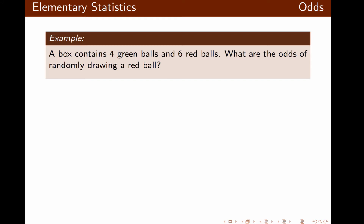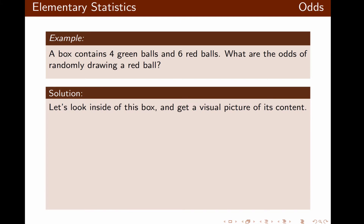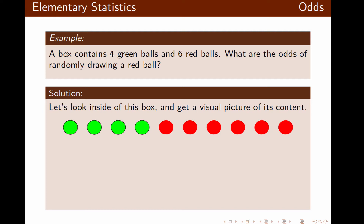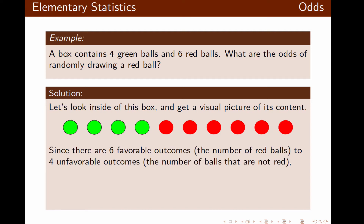Let's look at this example. A box contains four green balls and six red balls, and we want to figure out the odds of randomly drawing a red ball. We have six favorable outcomes, which is the number of red balls, and four unfavorable outcomes, which is the number of balls that are not red. So the odds are 6 to 4, which reduces to 3 over 2, or 3 colon 2.